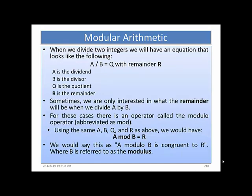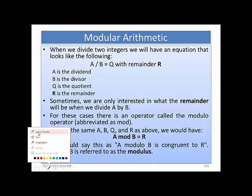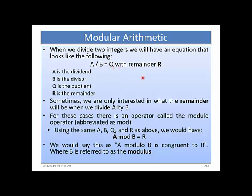When we divide two integers we will have an equation that looks like: A divided by B is equal to Q with remainder R, where A is the dividend, B is the divisor, Q is the quotient, and R is the remainder. Sometimes we are only interested in the remainder when we divide A by B. For these cases there is an operator called the modulo operator, abbreviated as mod. Using A, B, Q, and R as above, we have: A mod B is equal to R.